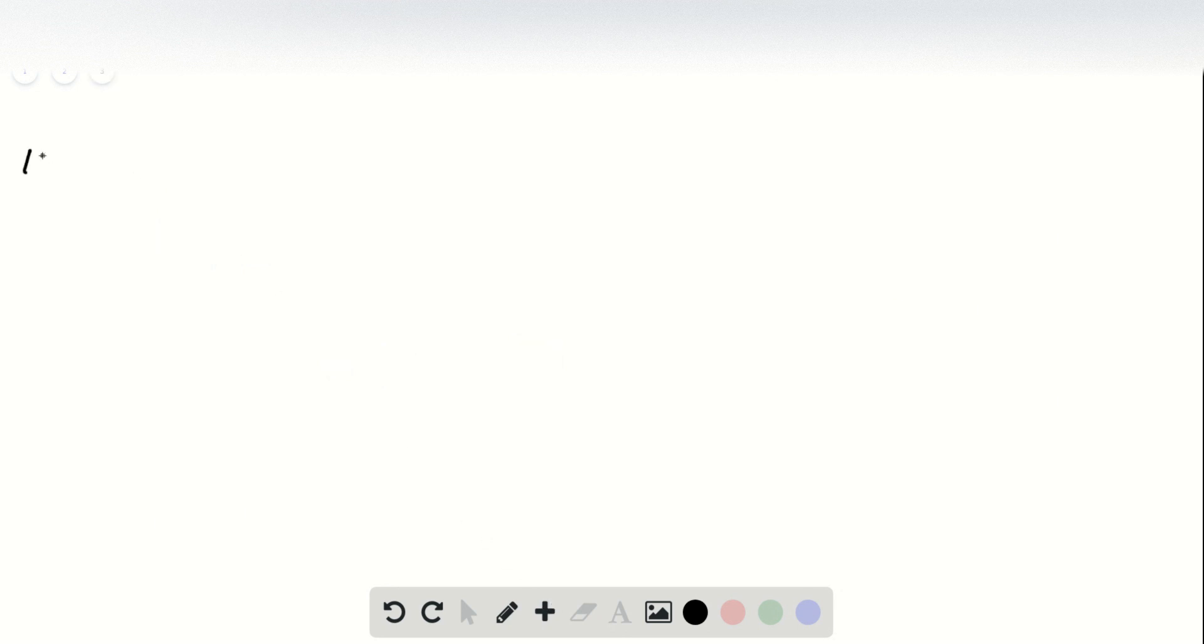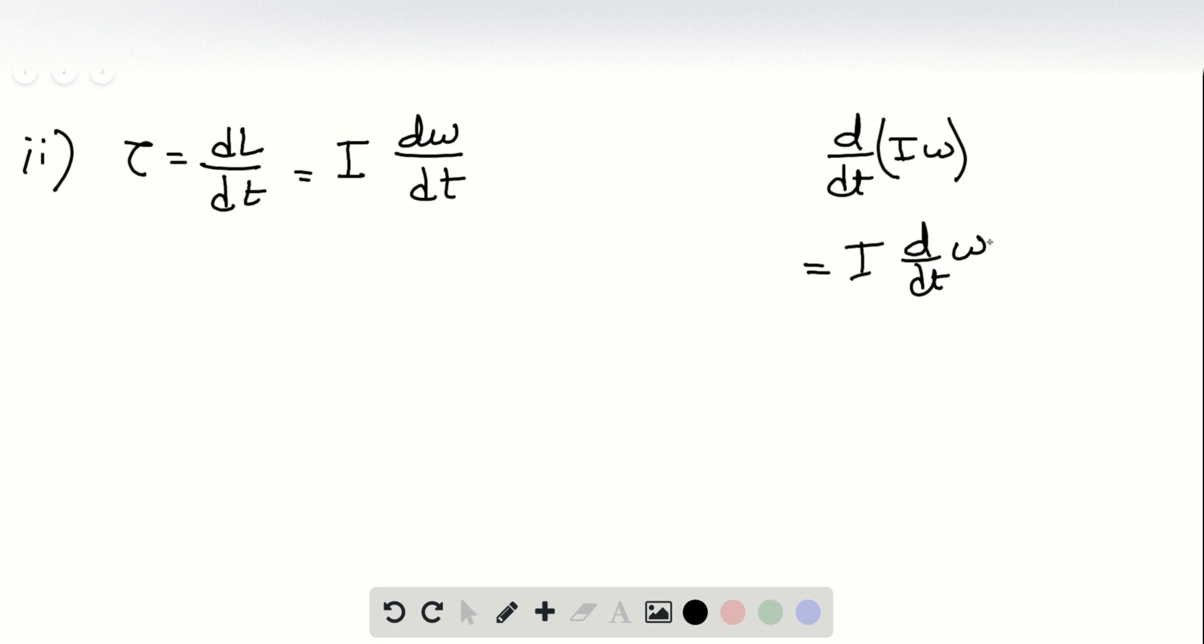Okay, so what about the torque? Now we know that torque is dL over dt, which can be written as I times d omega by dt. And the reason for that is this is d/dt of I times omega, where I is constant, so we take I outside. That gives us I times d/dt of omega, and that's what we wrote here.